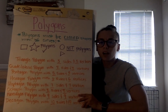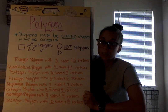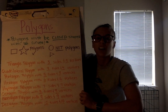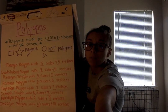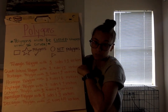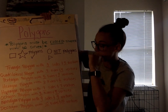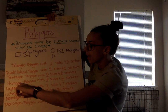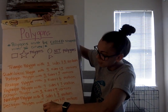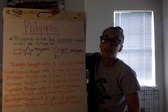Once we figure out that it's a polygon, we have to figure out what kind of polygon it is. This will be on Google Classroom. Based on its sides and vertices — and vertices means those corners of the shape — we have: a triangle (3 sides, 3 vertices), a quadrilateral (4 sides, 4 vertices), a pentagon (5 sides, 5 vertices), a hexagon (6 sides, 6 vertices), a heptagon (7 sides, 7 vertices), an octagon (8 sides, 8 vertices), a nonagon (9 sides, 9 vertices), and a decagon (10 sides, 10 vertices).